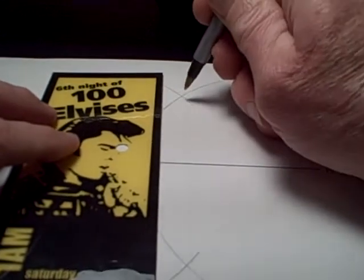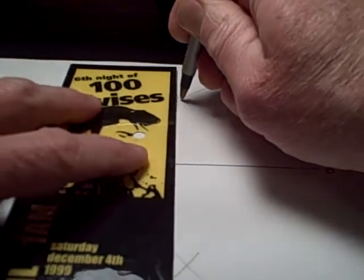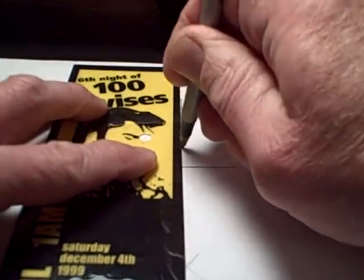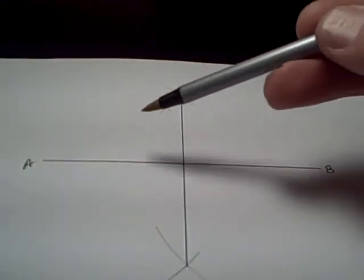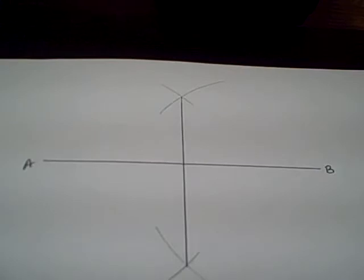With my straightedge, which takes the form of my eldest bookmark, I'm going to connect this point to this point down here and I assert that I have bisected the line segment from A to B.